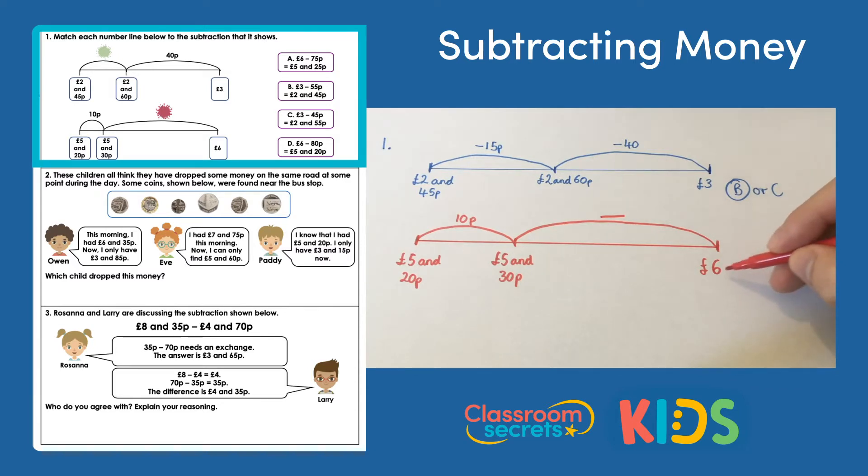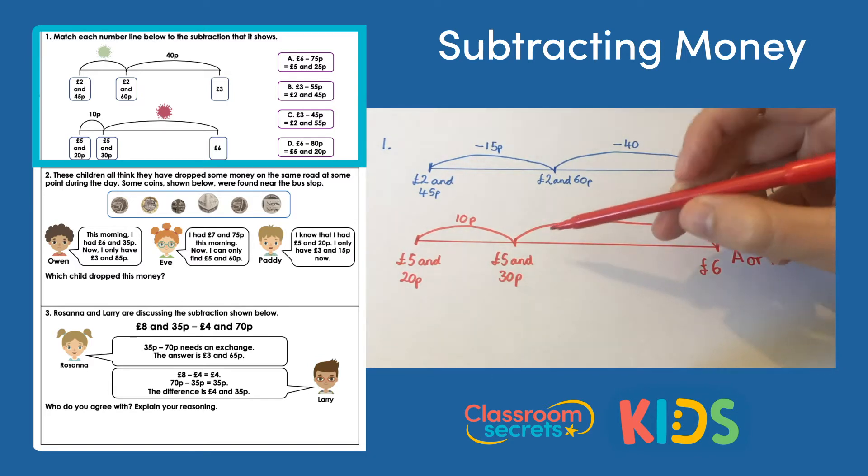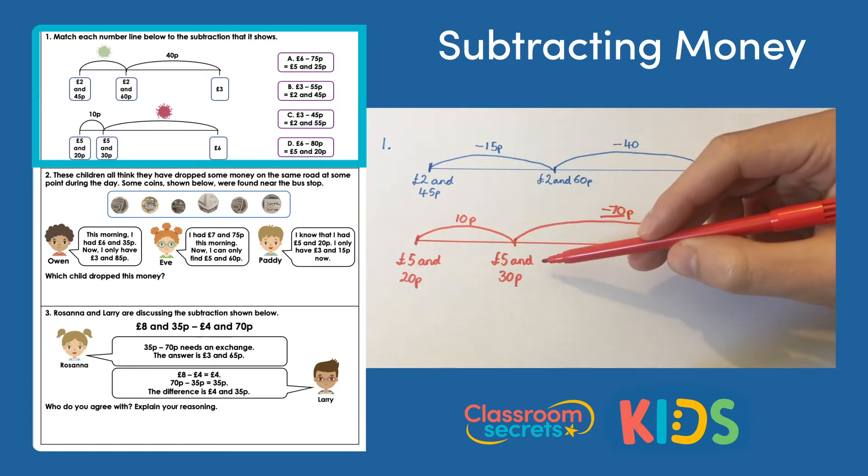So we start with six pounds and we're taking away from six pounds, so that means it's either A or D. We're starting with six and we get to five pounds 30, and that's because we've taken away 70p there. So six pounds take 70 pence gets us to five pounds and 30 pence, and then taking away 10 pence gets you to five pounds and 20 pence.